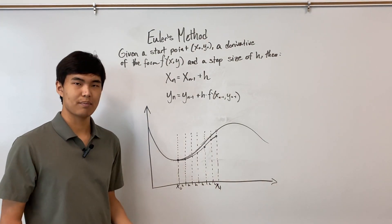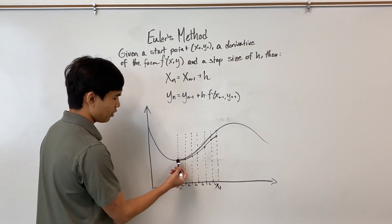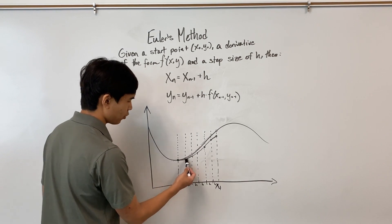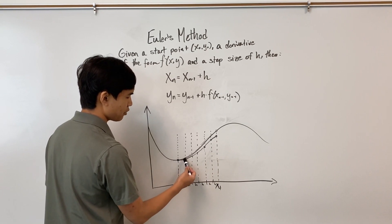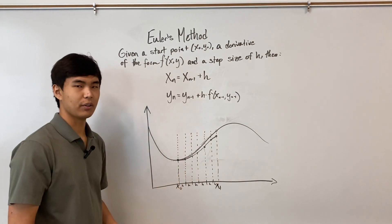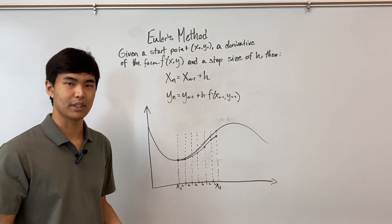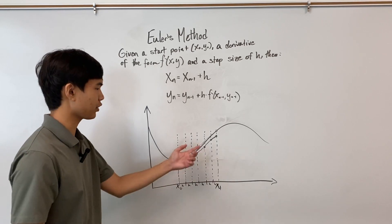And you can think of each step as a correction to the course we're going on. So for example, if we just took this tangent line all the way here, we would have gotten here, which is way off. But since we stopped here, we made a correction, and went this way, made a correction, went this way. And so if you increase the number of steps you take, you're increasing the number of corrections you're making, which of course, will make your curve more accurate.